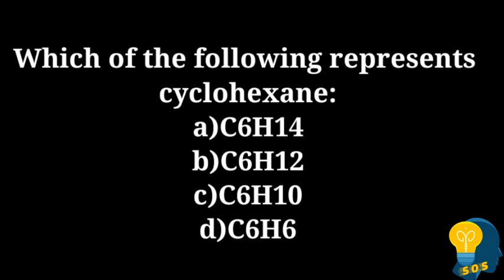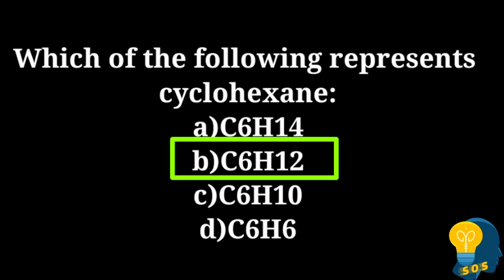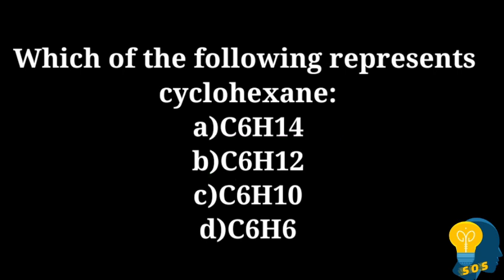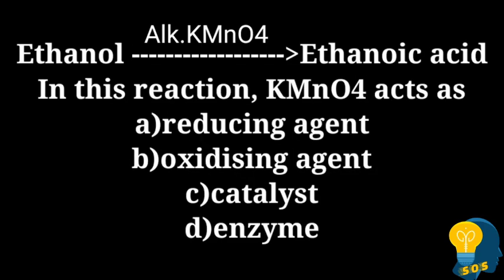Today's first question is: which of the following represents cyclohexane? The options are option A: C6H14, option B: C6H12, option C: C6H10, option D: C6H6. The correct option is option B, C6H12, because cyclohexane's general formula is CnH2n, so for n=6, that gives C6H12.